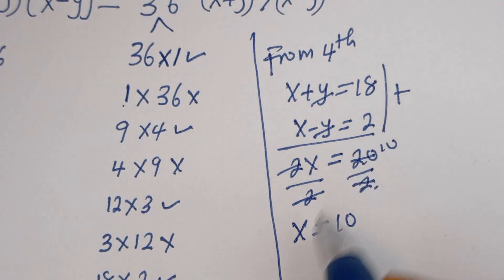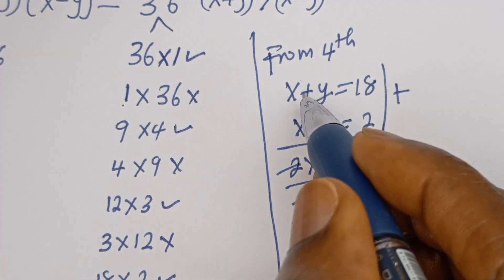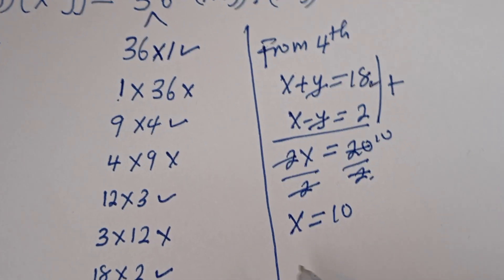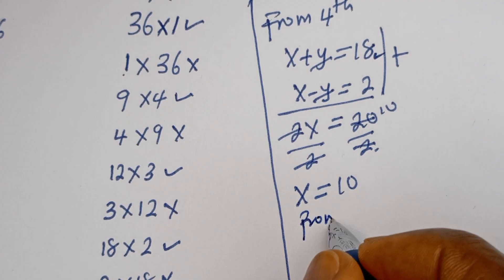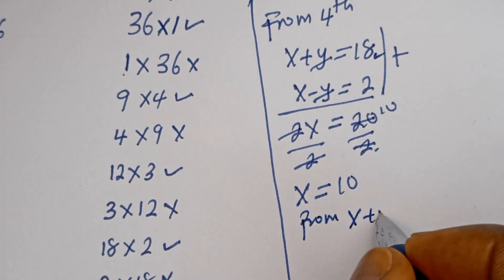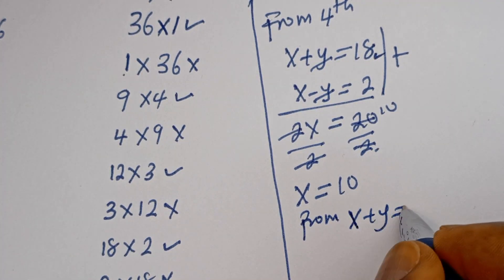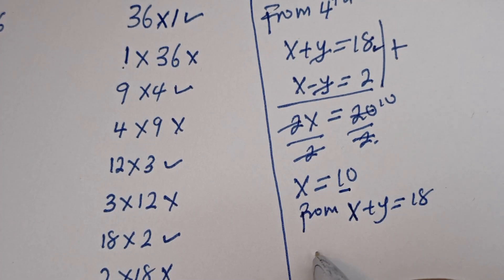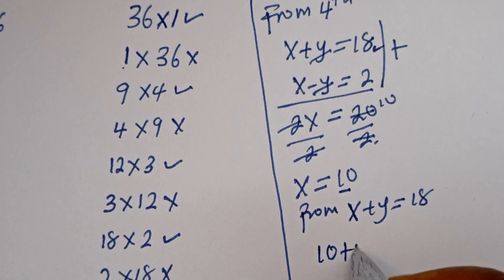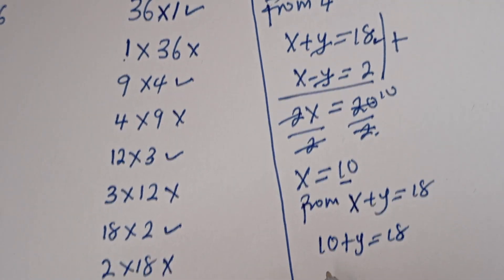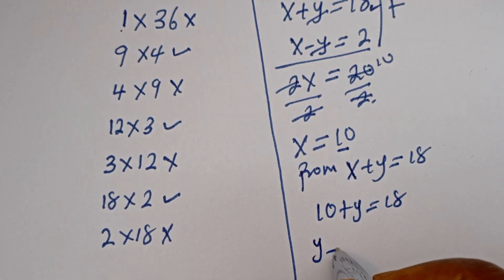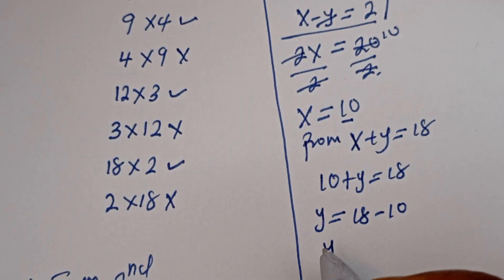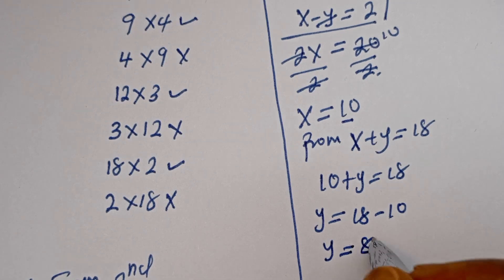Let's solve for y. From the equation x plus y is equal to 18, when x is 10, we have 10 plus y is equal to 18, so y is equal to 8. This is also a natural number.